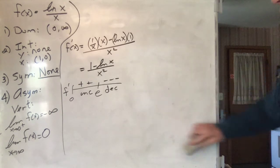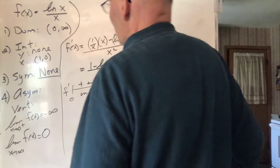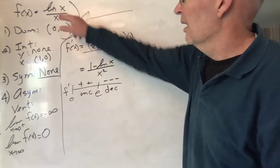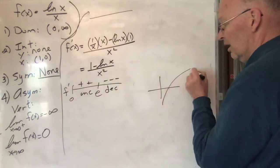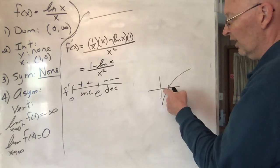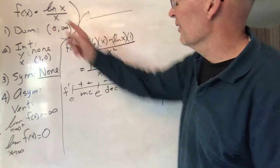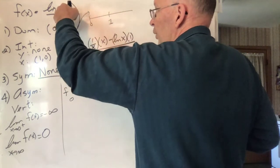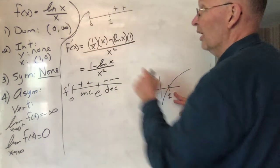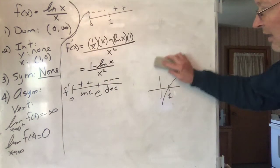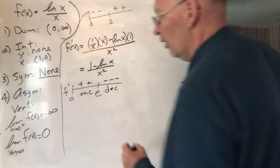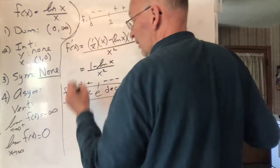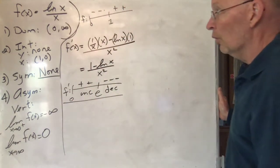Let me also note where the function is positive or negative. ln(x) is positive for x > 1 and negative for 0 < x < 1, while x is always positive on the domain. So the function is zero at x = 1, positive for x > 1, and negative for 0 < x < 1. It's always good to have all this information — if you do anything wrong, you'll have contradictory information and catch yourself.